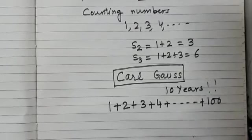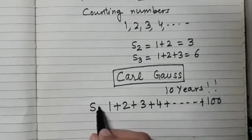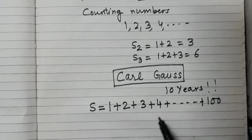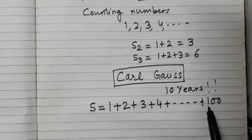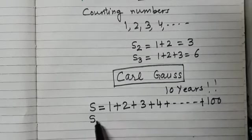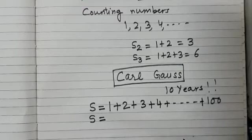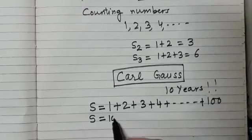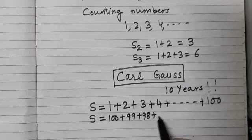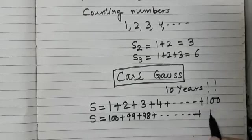So Carl Gauss wrote S is equal to, that is sum is equal to 1 plus 2 plus 3 plus 4 up to 100. Then he did an interesting thing.